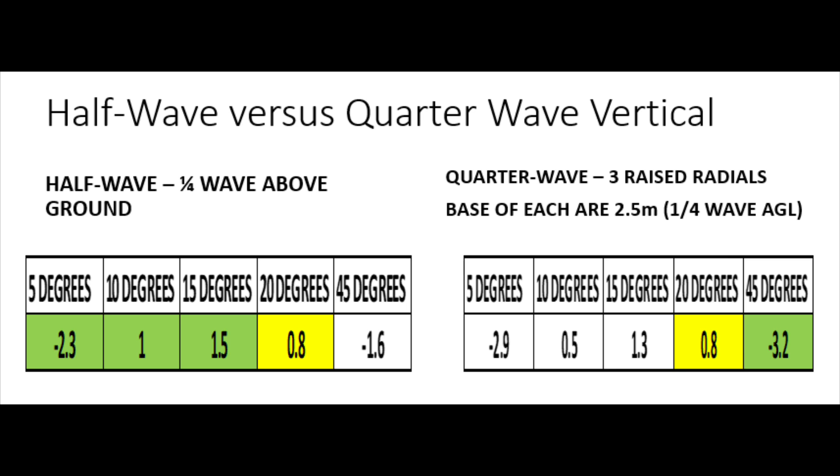So they're both a quarter wave above the ground. And we can see again on the left-hand side, the half wave has a slight advantage, not a huge amount, around half a dB for 5 and 10 degrees off the horizon. It's a draw at 20, and again, the quarter wave is better by about 1.5 dBs at 45 degrees. Now if we keep going, half wave above the ground.